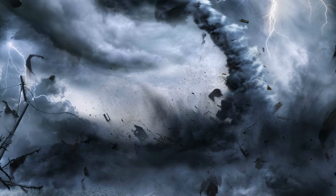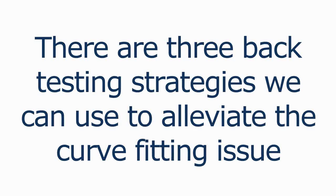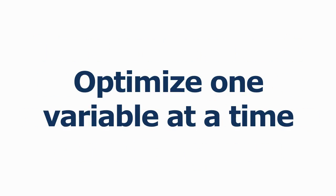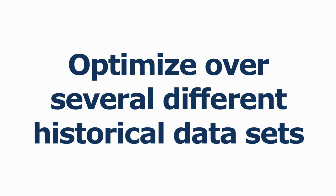There are three backtesting strategies that we can use to alleviate the curve fitting issue. First, we can optimize one variable at a time and look for ranges of variable values that all produce profitable results, then pick a value from the middle of the range. This value may not have the optimal result but ensures that small variances will still be profitable.